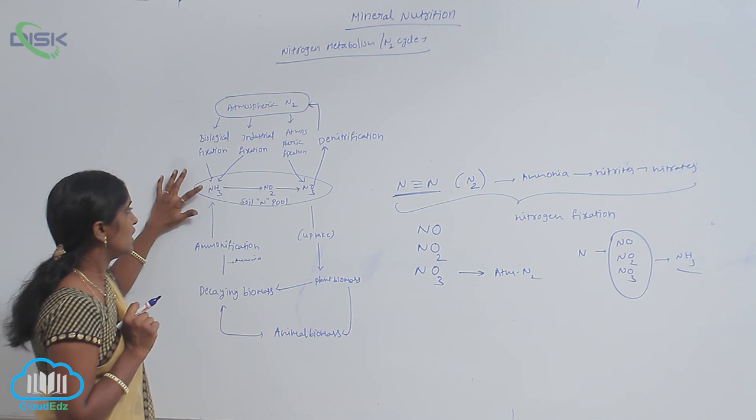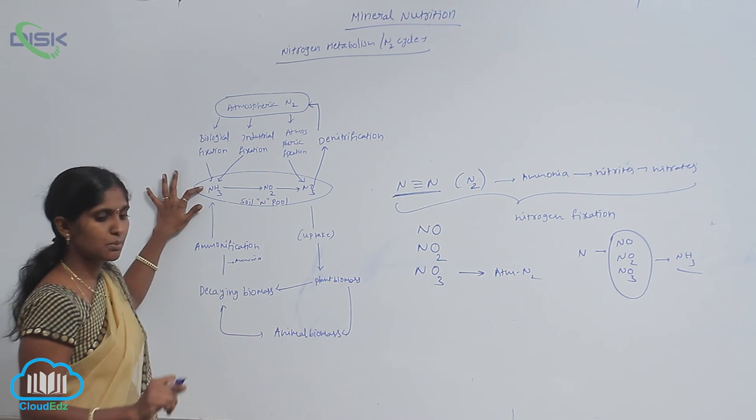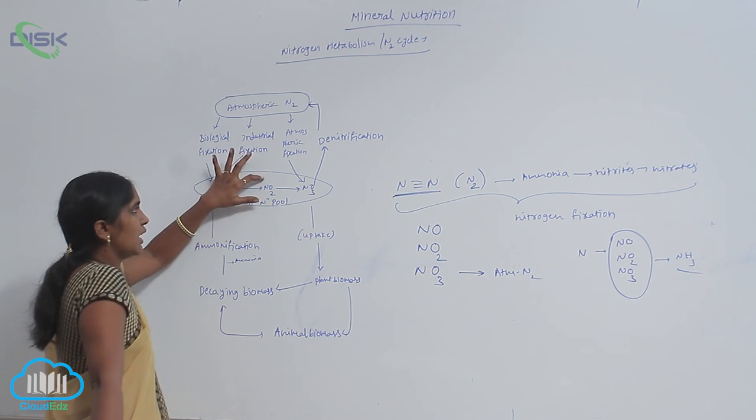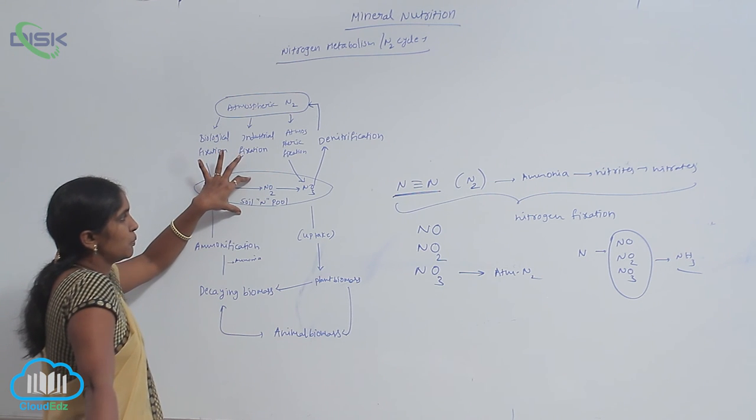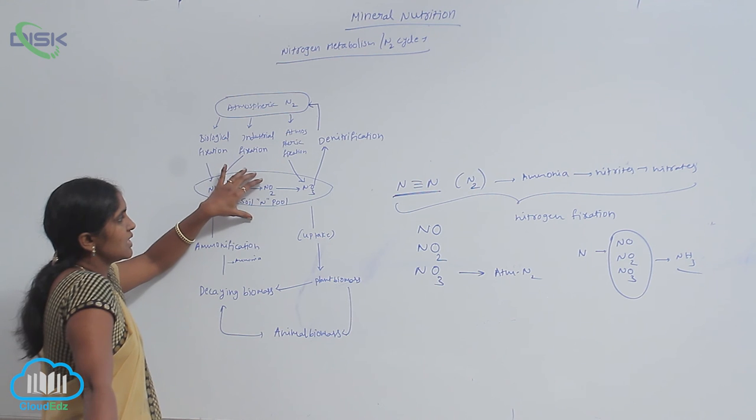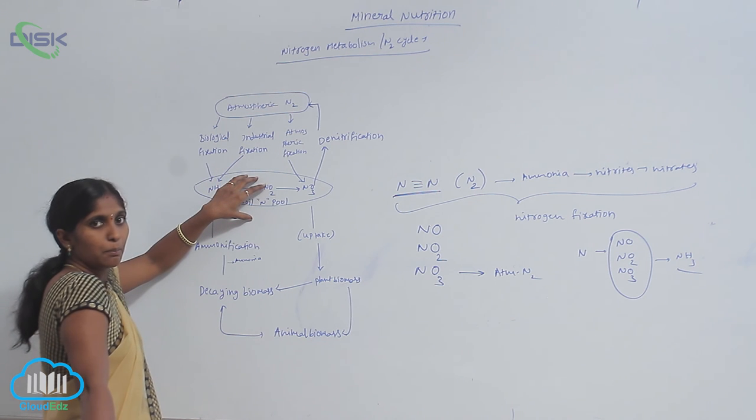So after ammonification, ammonia is being turned into nitrites and nitrates. In the soil, the nitrogen pool is formed. That is the available nitrogen for the plants.